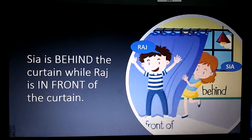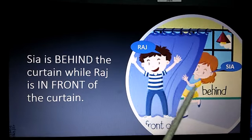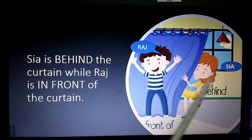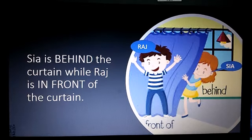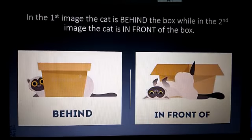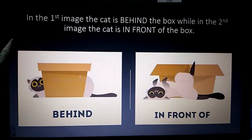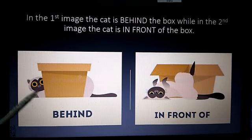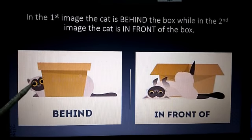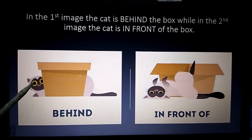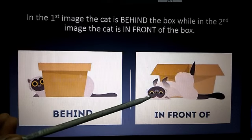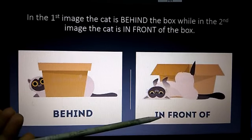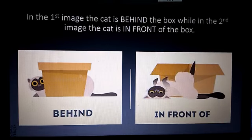Moving to our next example, Sia is behind the curtain while Raj is in front of the curtain. In the first image, the cat is behind the box, while in the second image, the cat is lying in front of the box.